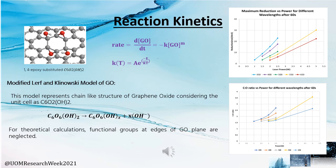As the next step, we modeled reaction kinetics using the results of temperature distribution modeling. We used the rate equation and the Arrhenius equation for calculations. We considered a modified Lerf-Klinowski model of graphene oxide, which represents a chain-like structure of graphene oxide with the unit cell as C6O2(OH)2. For theoretical calculations, functional groups at the edges of the graphene oxide plane, such as carboxyls and carbonyls, were neglected. We separately calculated reaction kinetics for selected wavelengths and powers, and plotted graphs to find maximum reduction and carbon to oxygen ratio for different laser parameters.